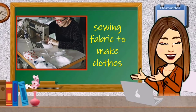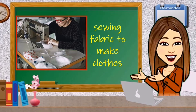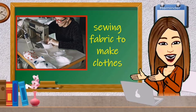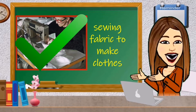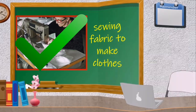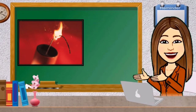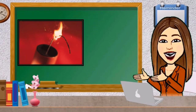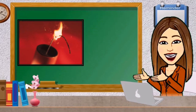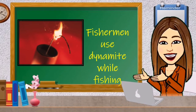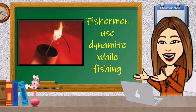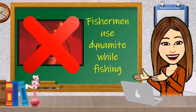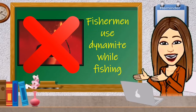Number 9: Sewing fabric to make clothes — is it useful or harmful to the environment? The correct answer is check. Sewing fabric to make clothes is useful to the environment. Number 10: Fishermen using dynamite while fishing — is it useful or harmful to the environment? The correct answer is X. Fishermen using dynamite while fishing is a harmful activity to the environment.